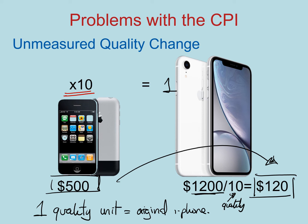If we're just looking at the smartphone category without accounting for the change in quality, we would be overstating inflation. Again, overstating means that what the CPI measures is greater than what households actually experience.